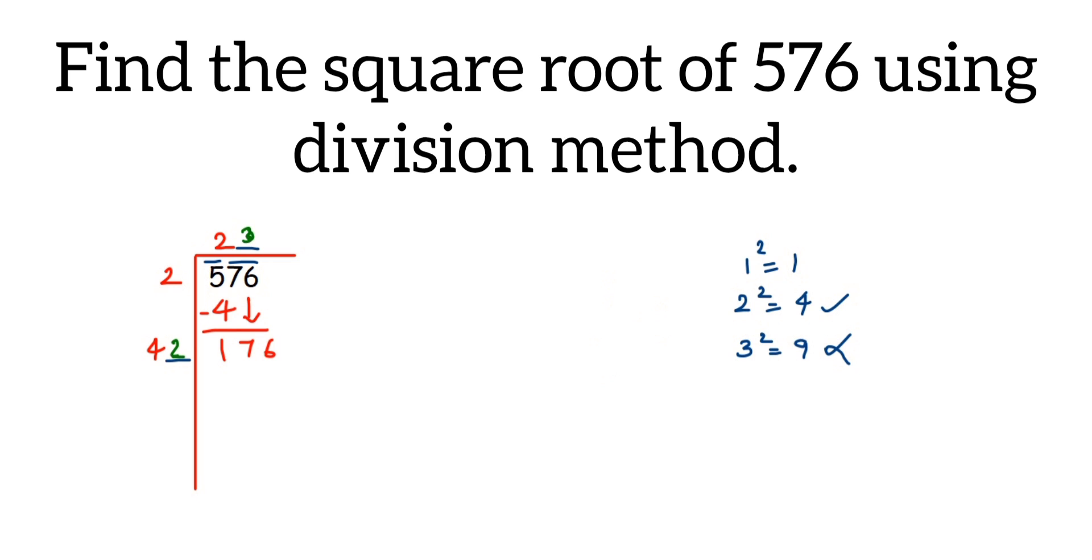What I'm saying is if I have taken 2 here, then I have to take 2 here, so it will be 42×2. Same number. Now 2 is just an example. I have to find out the correct number.